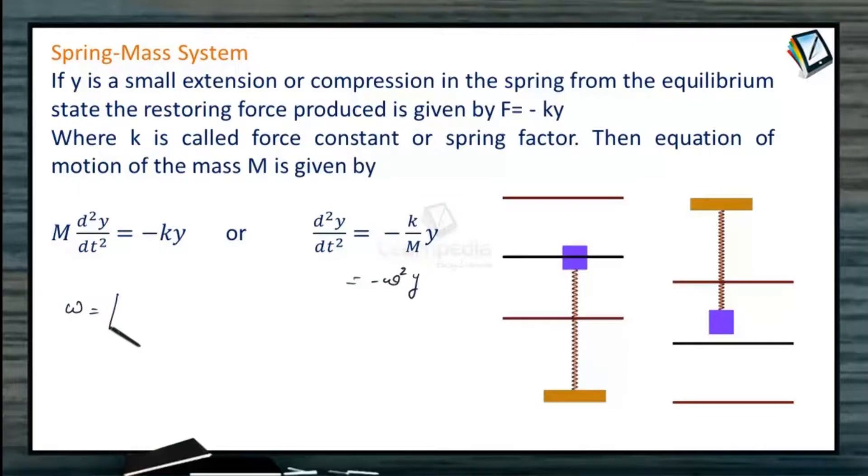We can write it like minus omega square into Y. Omega here, angular frequency, is K by M. Time period of oscillation for spring mass system is 2π under root M divided by K.